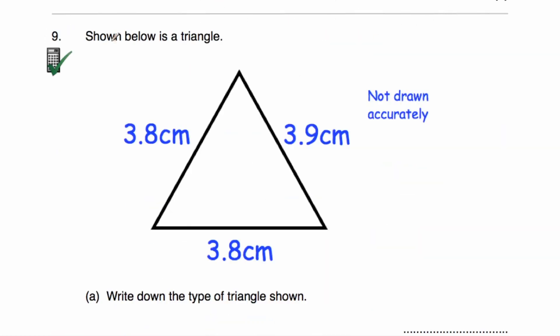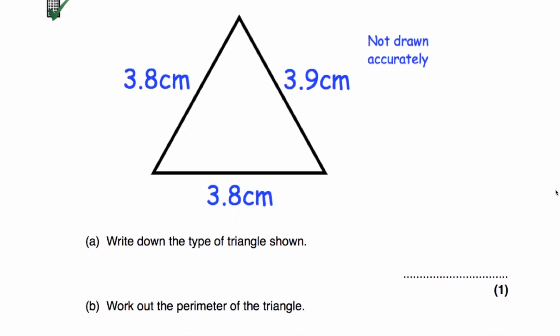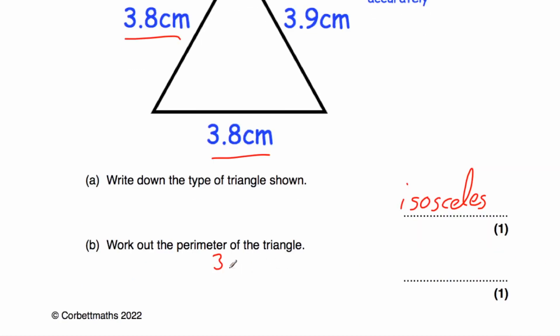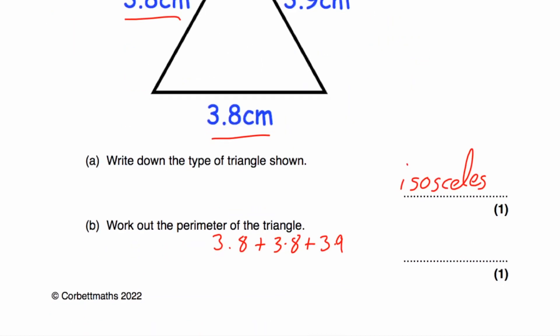Question number nine says: shown below is a triangle with sides measuring 3.8 centimetres, 3.9 centimetres and 3.8 centimetres — not drawn accurately. We're asked what type of triangle is shown. As you can see, two sides have equal length, so that will be an isosceles triangle. Part B asks for the perimeter of the triangle. The perimeter is the distance around the outside, so 3.8 plus 3.8 plus 3.9. It's a calculator question, so 3.8 + 3.8 + 3.9 = 11.5 centimetres.